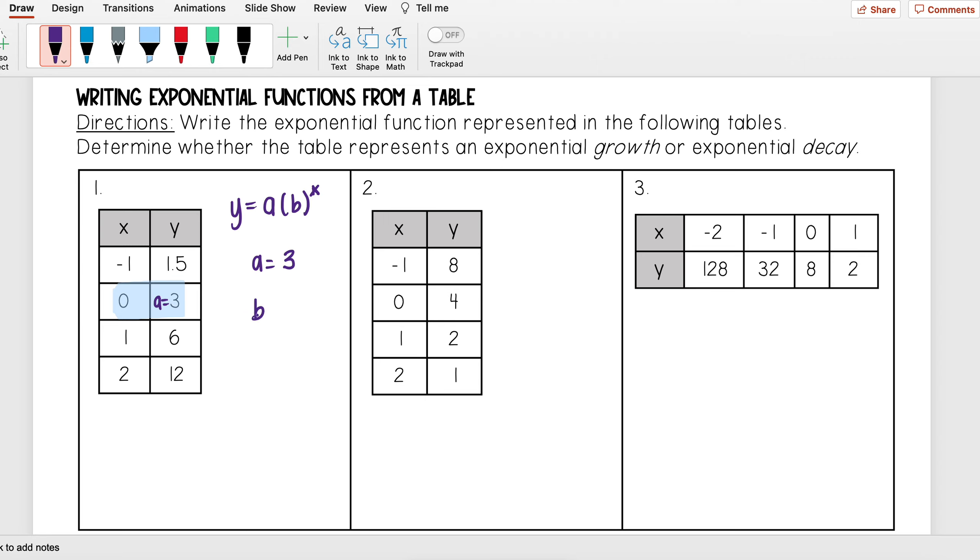Now I need to figure out what my b is. My b is what I'm multiplying by each time. One way that you can do this is just to look at it. For instance, what do I need to multiply to get from three to six? Well, I need to multiply by two. To get from six to twelve, I multiply by two.